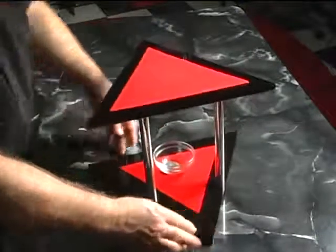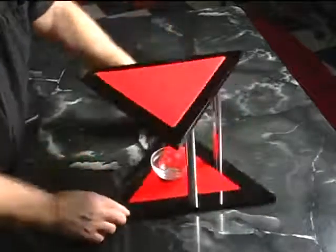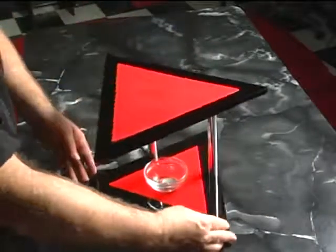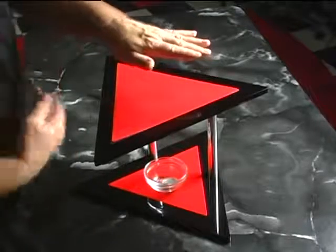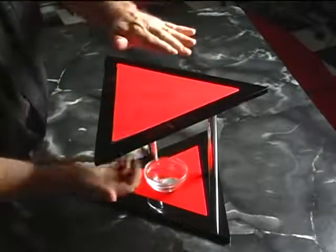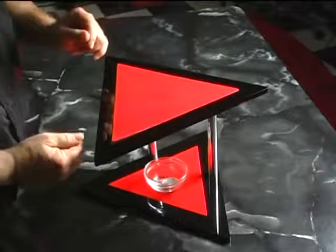This is called Dean's Triangle. And the difference between this one and the Bermuda Triangle is that things would vanish into the Bermuda Triangle. In this case, things will vanish and reappear from up here to down here in Dean's Triangle.